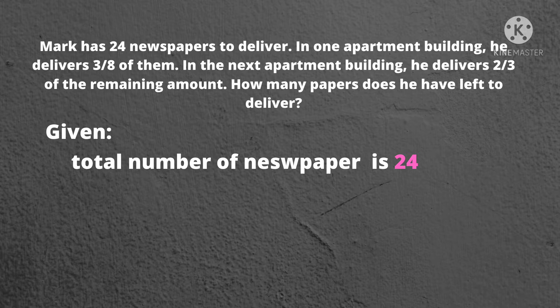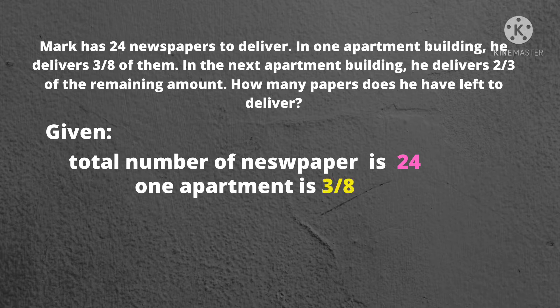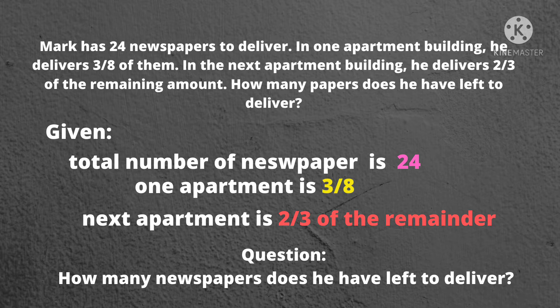Let's now identify the first given. Total number of newspapers is 24. Then one apartment is three-eighths. Next apartment is two-thirds, or two-thirds of the remainder. Question: How many newspapers does he have left to deliver?